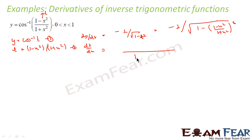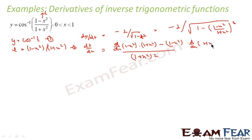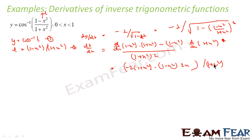Using the quotient rule, dt/dx equals: (1 + x²)² in the denominator, with numerator equal to [d/dx(1 − x²)] · (1 + x²) minus (1 − x²) · [d/dx(1 + x²)]. Solving further: d/dx(1 − x²) = −2x and d/dx(1 + x²) = 2x. So the numerator becomes −2x·(1 + x²) minus (1 − x²)·2x.